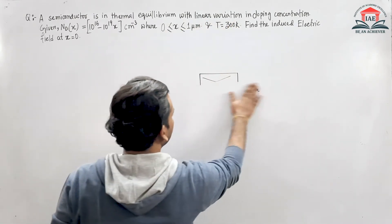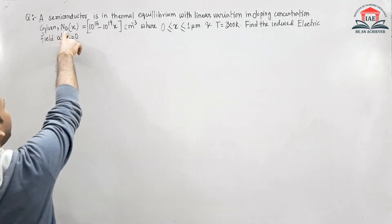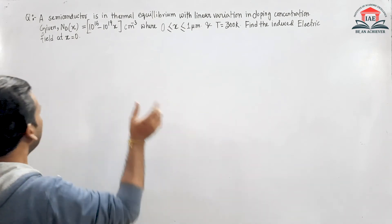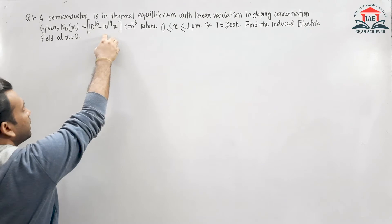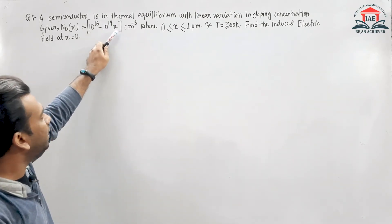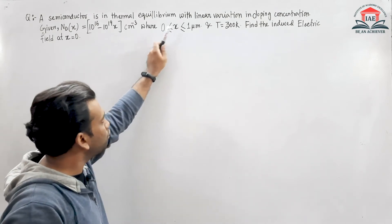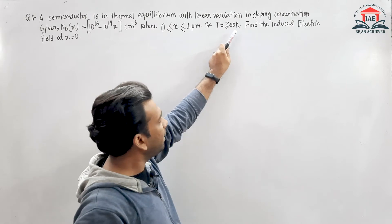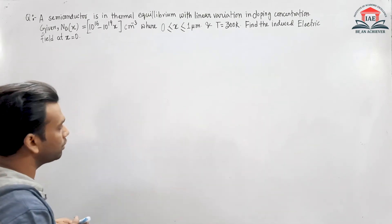Looking at the second line: given Nd(x), the variation of doping concentration is Nd(x) = 10^16 - 10^19 * x, where x is between 0 to 1 micrometer, T = 300 K. Find the induced electric field at x = 0.